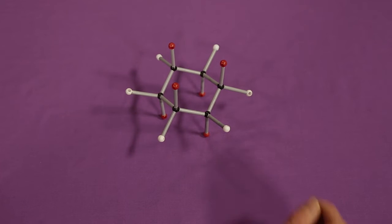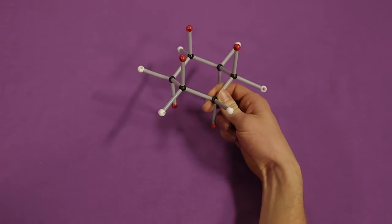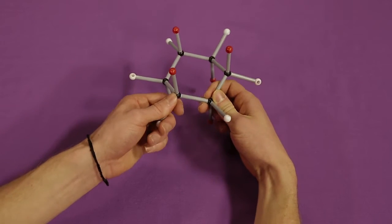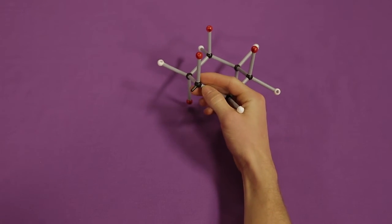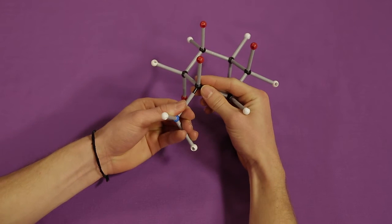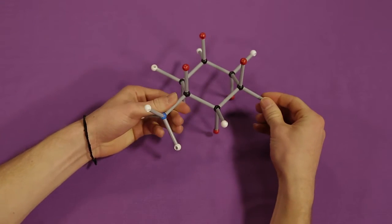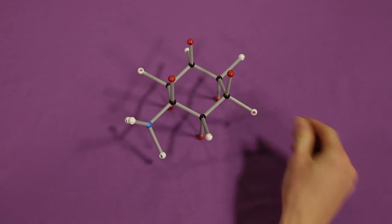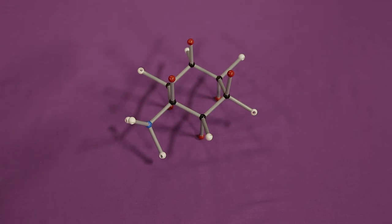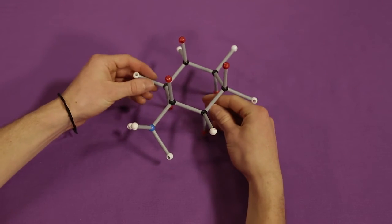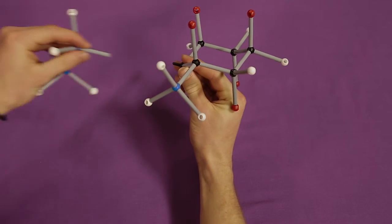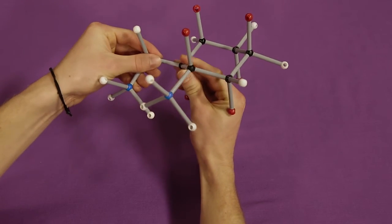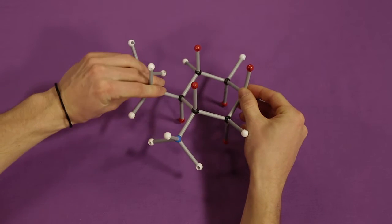Let's work on an example together. Take your cyclohexane model and place a methyl substituent in an equatorial position that points down. Next, place an ethyl substituent on an equatorial position directly next to the first substituent.